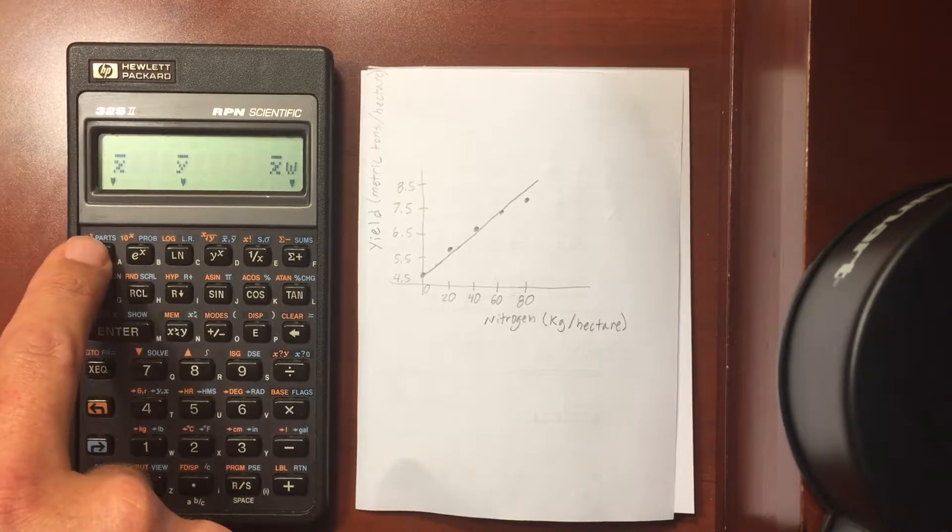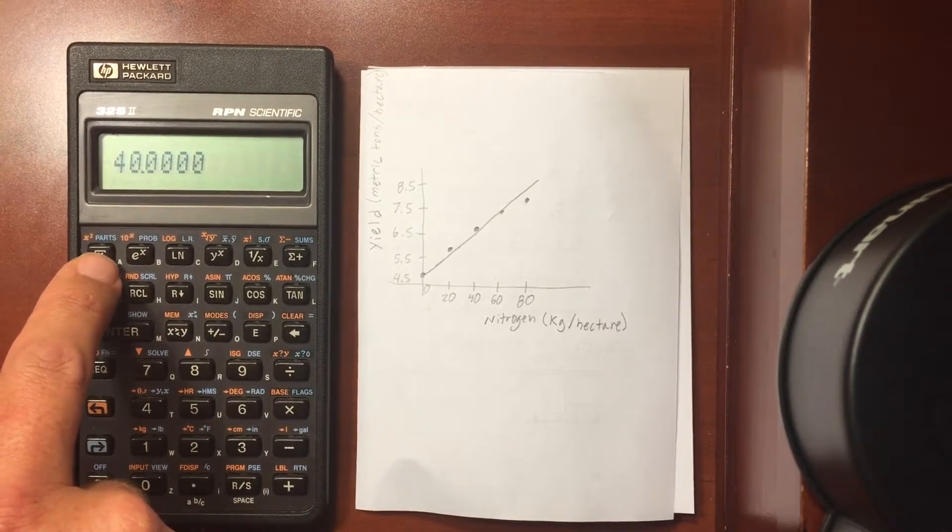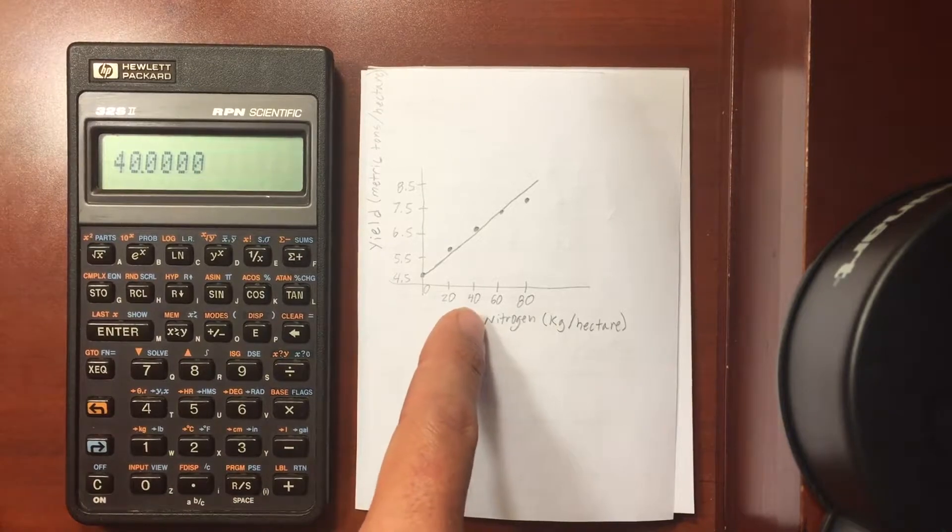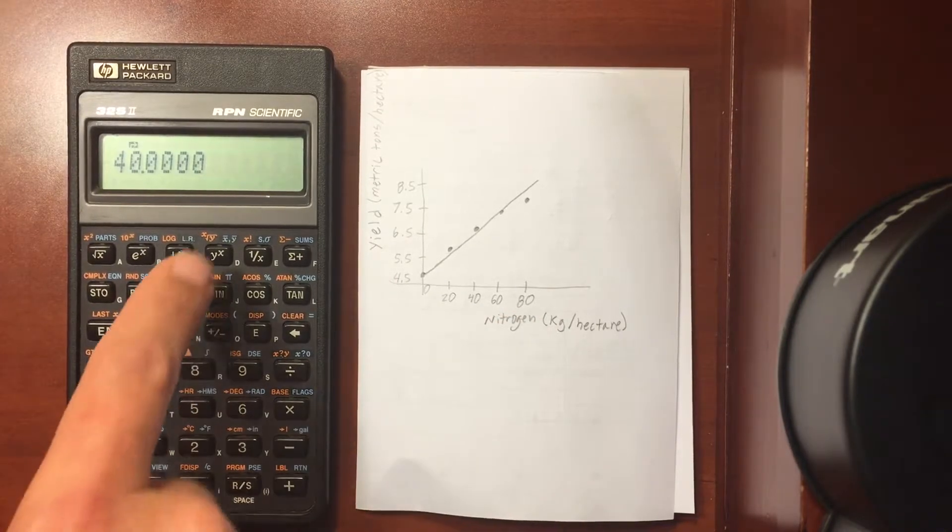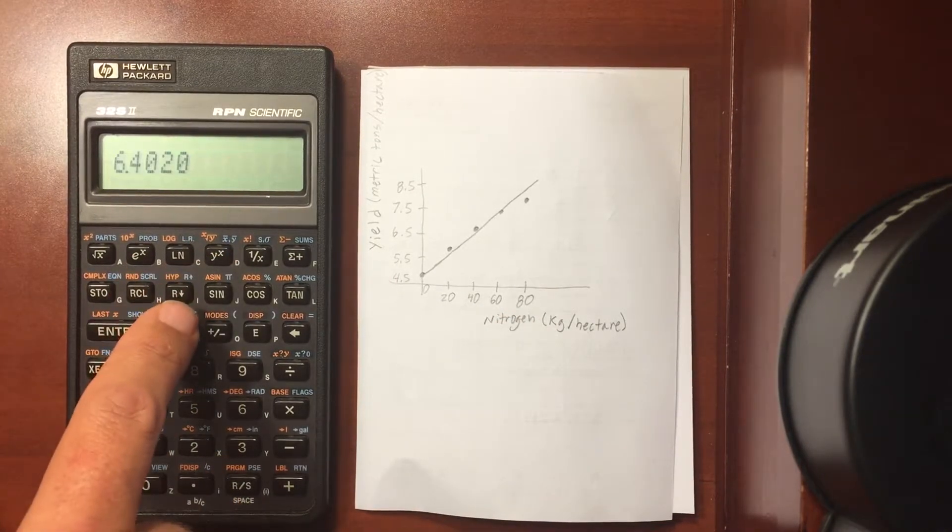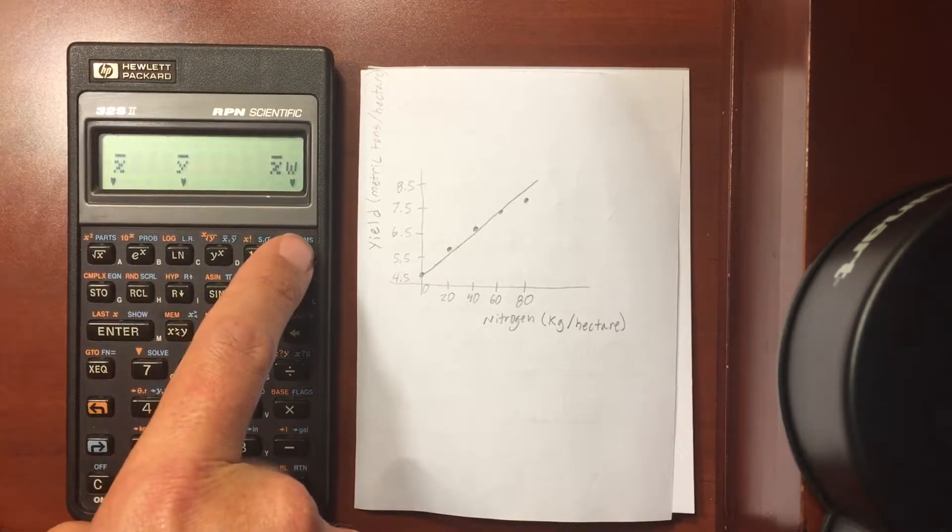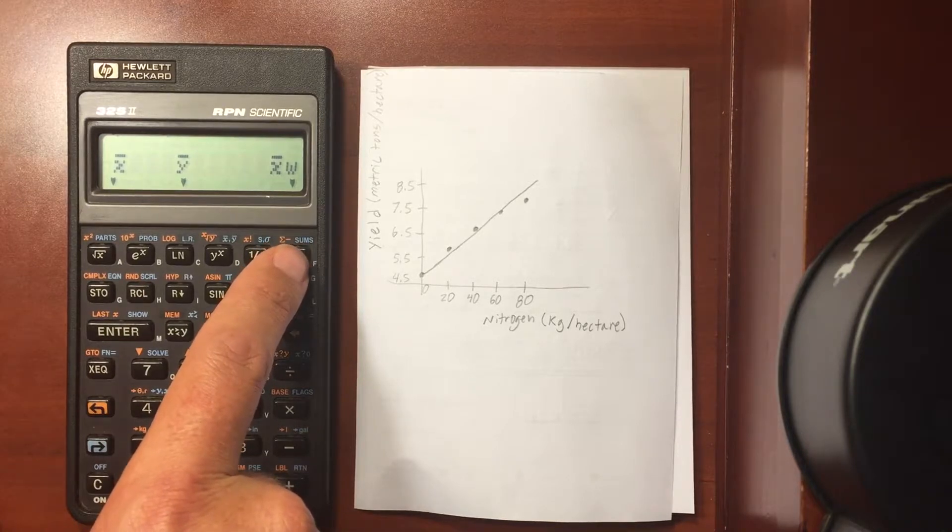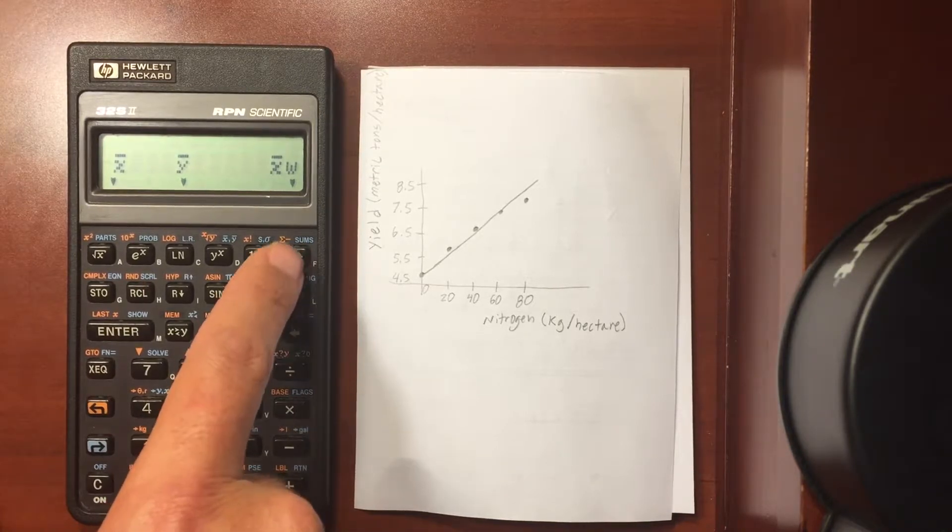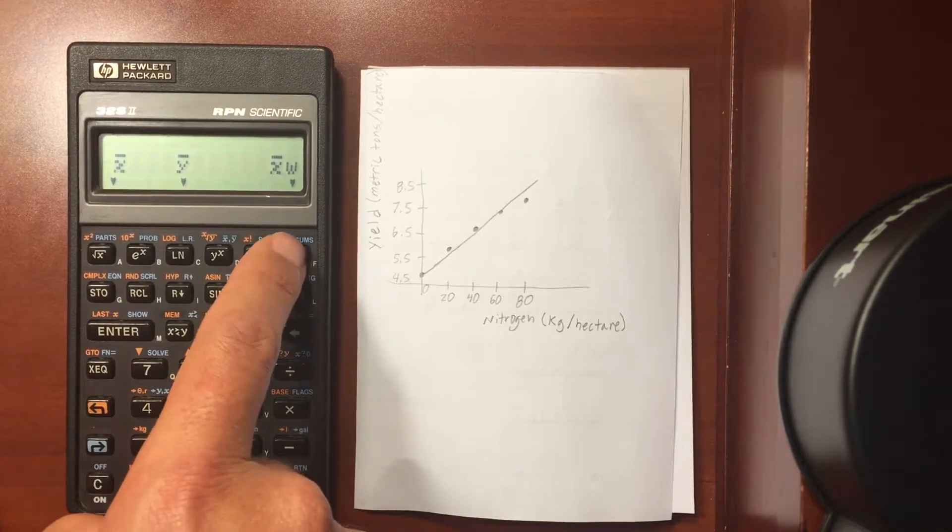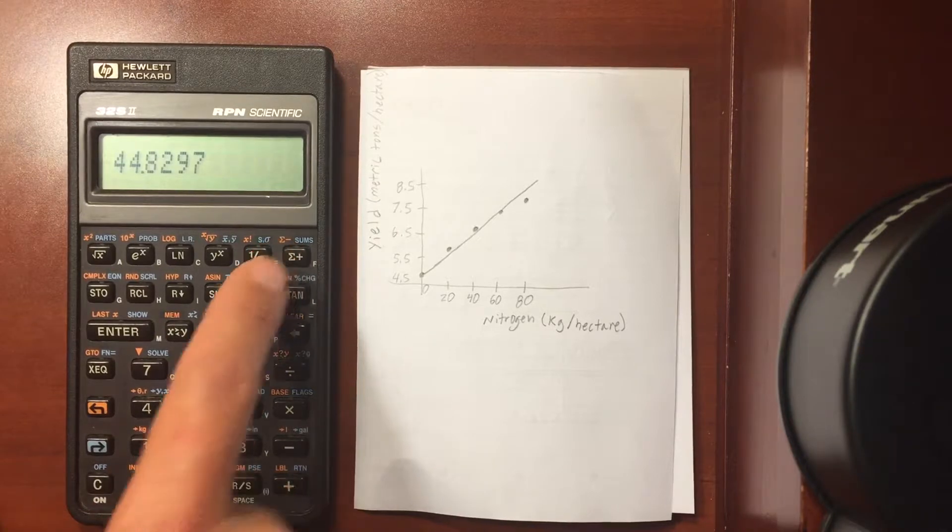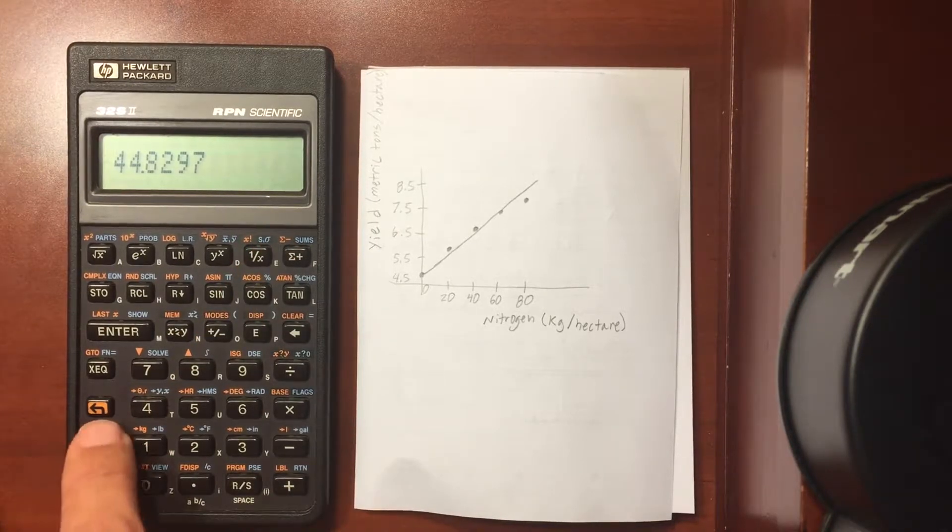Your means. So the mean value of x is 40. That makes sense. 40 is right in the middle. And of y, you have 6.4. And then, of course, you can get a weighted mean as well, where the x values are weighted by the y values. Which doesn't mean much in this situation, but is there.